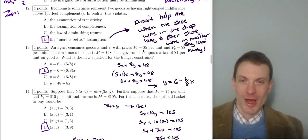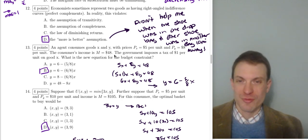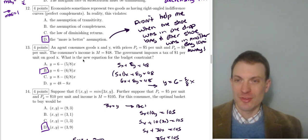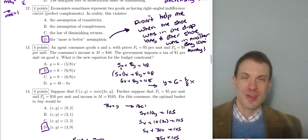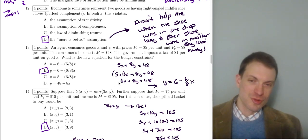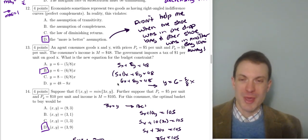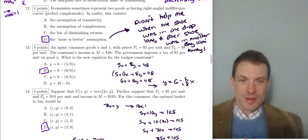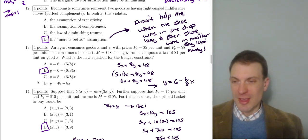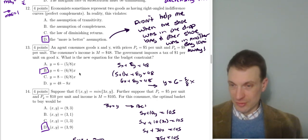Question thirteen: an agent consumes goods x and y with Px = 5, Py = 8, and income = 48. The government imposes a tax of $1 per unit on good x. Treat this as an increase in the price of good x from 5 to 6. The new budget line equation is y = 6 - (6/8)x, or y = 6 - (3/4)x. That's option B.